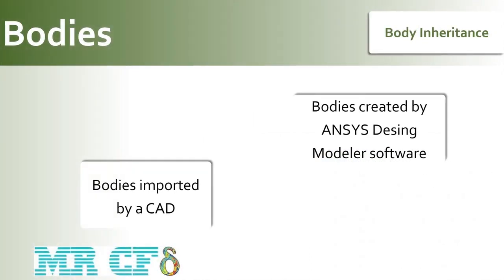Body inheritance: new bodies by default are unnamed and appear as visible bodies in the tree outline. However, when a new body is created that is derived from another existing body, it will inherit several properties of the original body. Additionally, bodies imported from a CAD system may inherit certain properties as well. Inheritance includes bodies created by the ANSYS DesignModeler application and bodies imported from a CAD system.